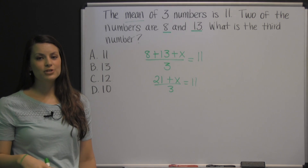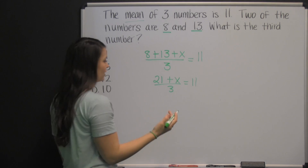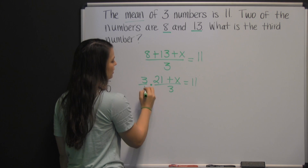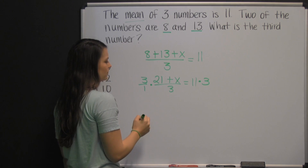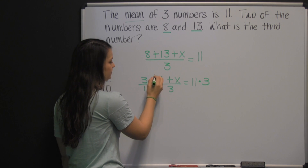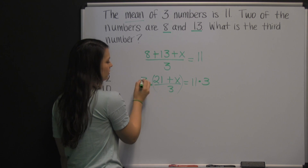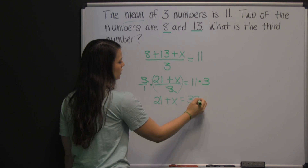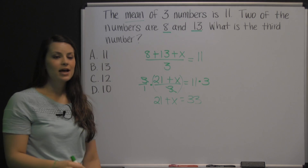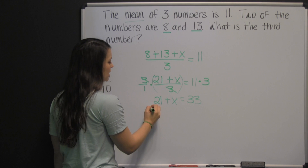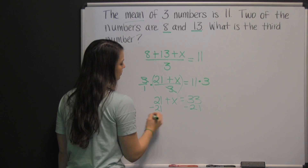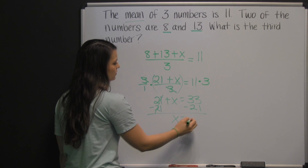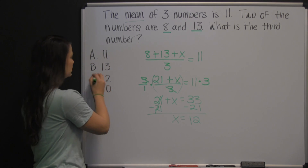From here there are a couple of different routes you can take, but the easiest one is to get rid of the dividing by three by doing the opposite — multiplying both sides of your equation by three. You can see on the left side our threes cross cancel. So we have twenty-one plus x equals thirty-three. Then, to solve for x, undo adding twenty-one to x by subtracting twenty-one from both sides. Twenty-one minus twenty-one is zero, so we're left with x equals twelve. So your answer is twelve.